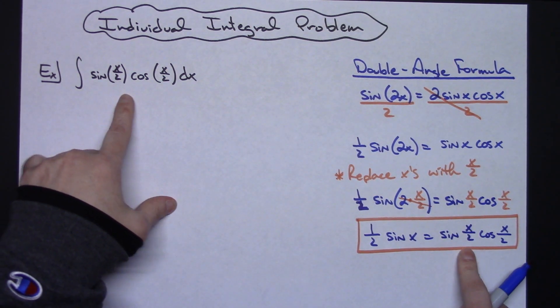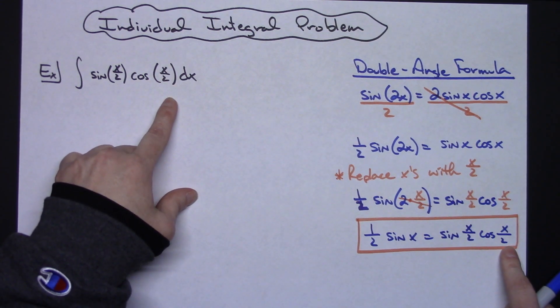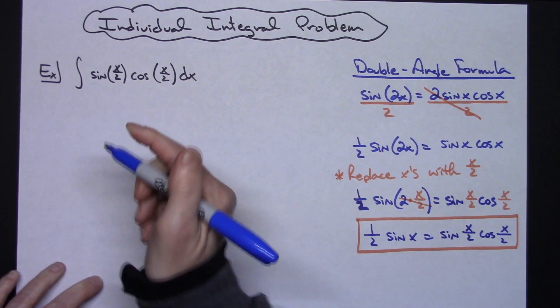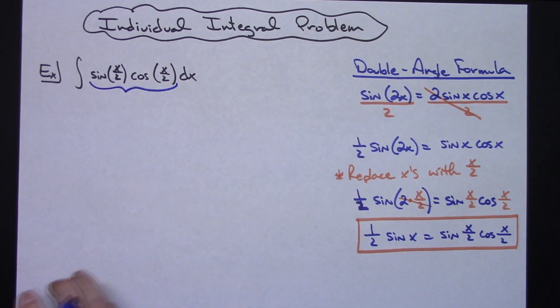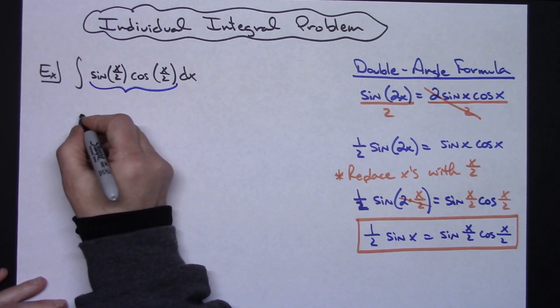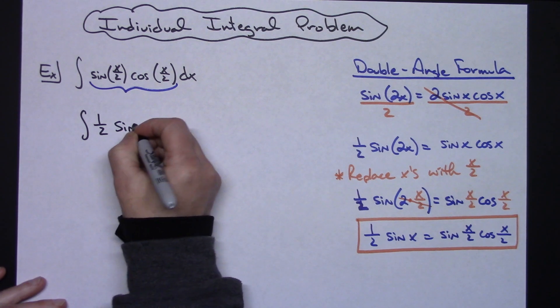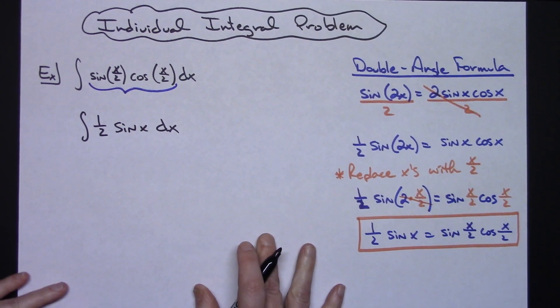I've got sin(x/2) times cos(x/2). So if this is equal to this, then I can replace this entire integral with (1/2)sin(x), and then as soon as I do that it now becomes a very simple integral that we can work out.